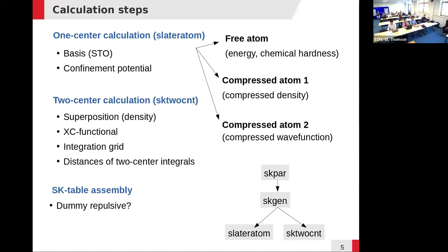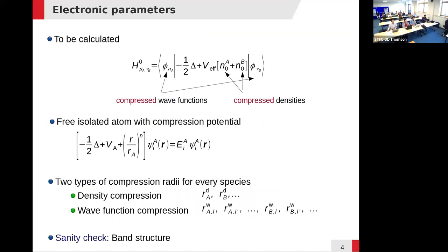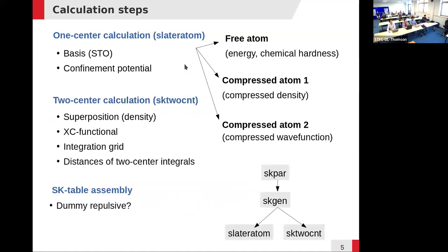Here you can see what you have to choose for the one-center calculations: the basis — Slater-type orbitals — and for each of the two compressed calculations the confinement potential. Once I have the wave functions and densities, the only thing left is to calculate the two-center integrals for different distances between centers a and b. This is done by the sk2cent program. The one-center calculation is done by a code called slater-atom. Both are part of the SKProx suite, which you will use today and can download from GitHub.